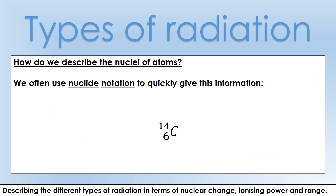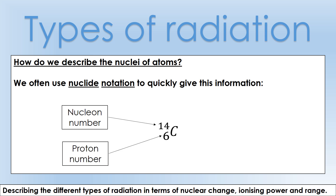We write those numbers in nuclide notation. For an isotope of carbon, the nucleon number (mass number) is on top and the proton number (atomic number) is on the bottom. To find the neutron number, take nucleon number minus proton number - in this case there are eight neutrons inside the nucleus.